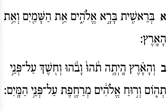This is a katon, which says 'katon.' So this is 'va-vohu.' Remember, the trope mark tells you where the accent of the word is. And this is a tipcha, so this is 've-choshech.'